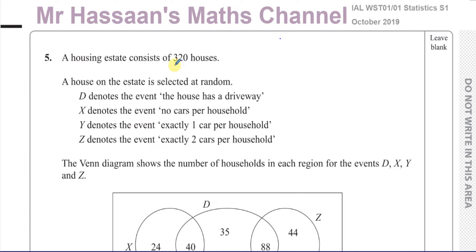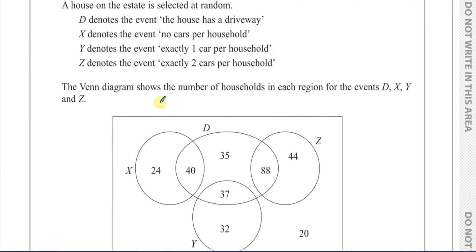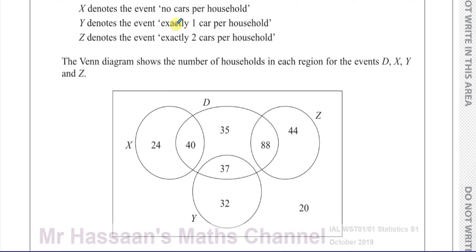It says a housing estate consists of 320 houses, and a house on the estate is selected at random. The circle D represents the event that the house has a driveway. The circle X denotes the event that there are no cars per household, Y the event that there's exactly one car per household, and Z exactly two cars per household. The Venn diagram shows the number of households in each region for the events D, X, Y and Z.